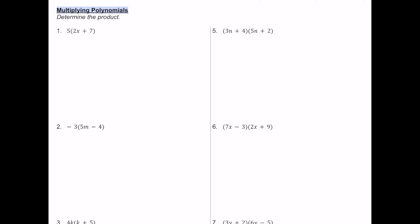Whenever you see these types of expressions, all you have to do to multiply is take the monomial and distribute it to both terms inside the binomial. 5 times 2x equals 10x, and then 5 times positive 7 is positive 35, so this would be the product.